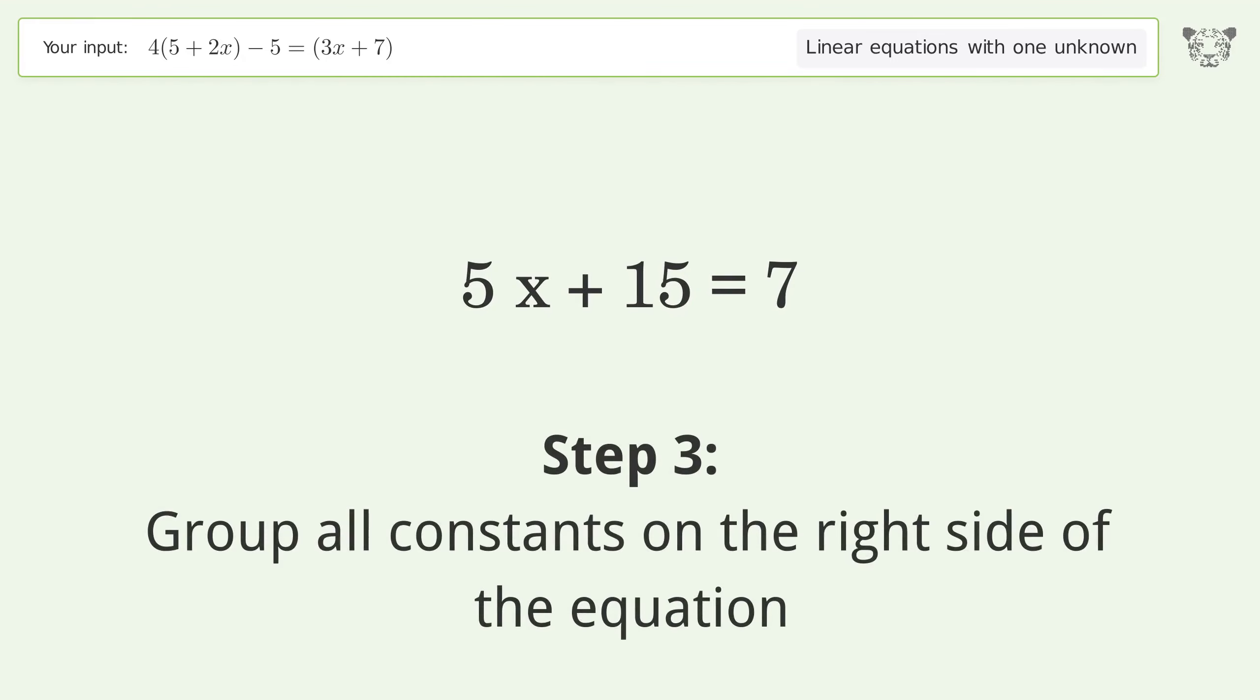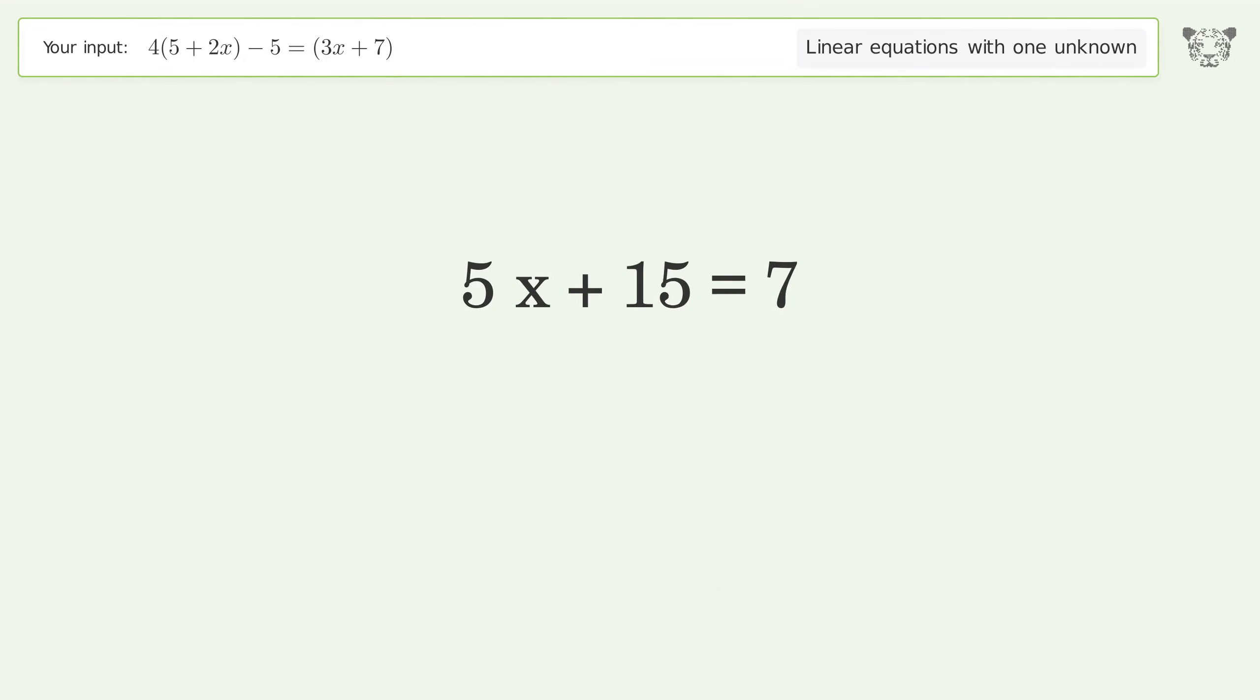Group all constants on the right side of the equation. Subtract 15 from both sides. Simplify the arithmetic.